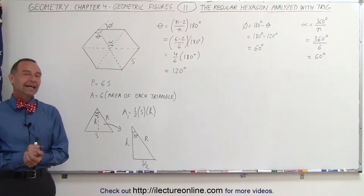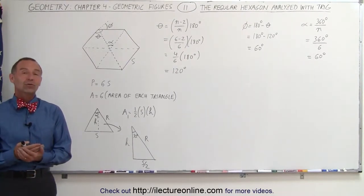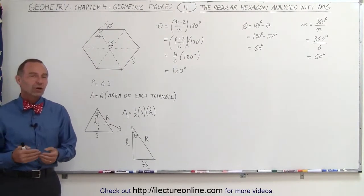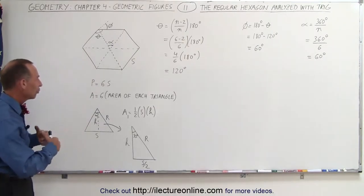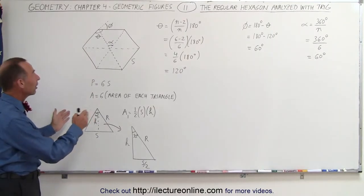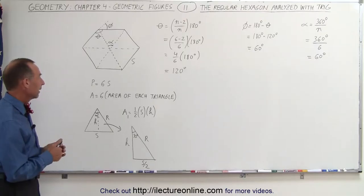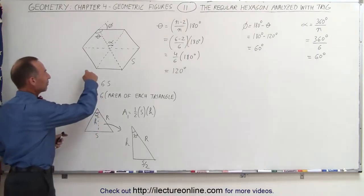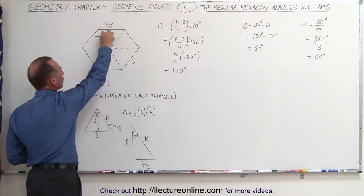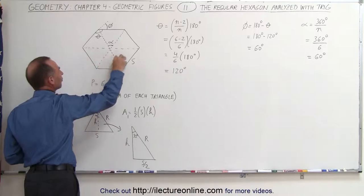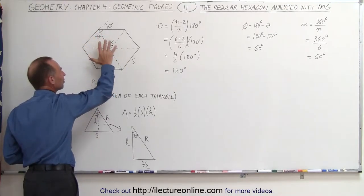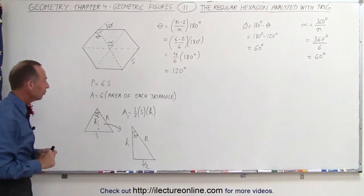Welcome to ElectronLine. Let's use the trigonometric functions to find the analysis of the area of the regular hexagon. Here we have, from the last video, a regular hexagon. We were able to divide the regular hexagon into six equal triangles.